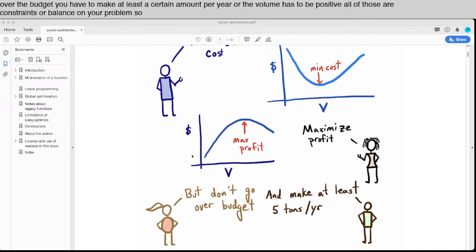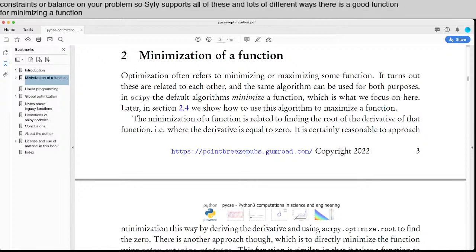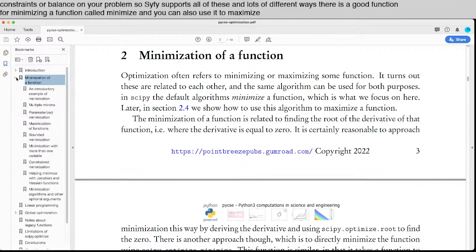SciPy supports all of these in lots of different ways. There's a good function for minimizing a function called minimize, and you can also use it to maximize the function just by taking the negative of that.